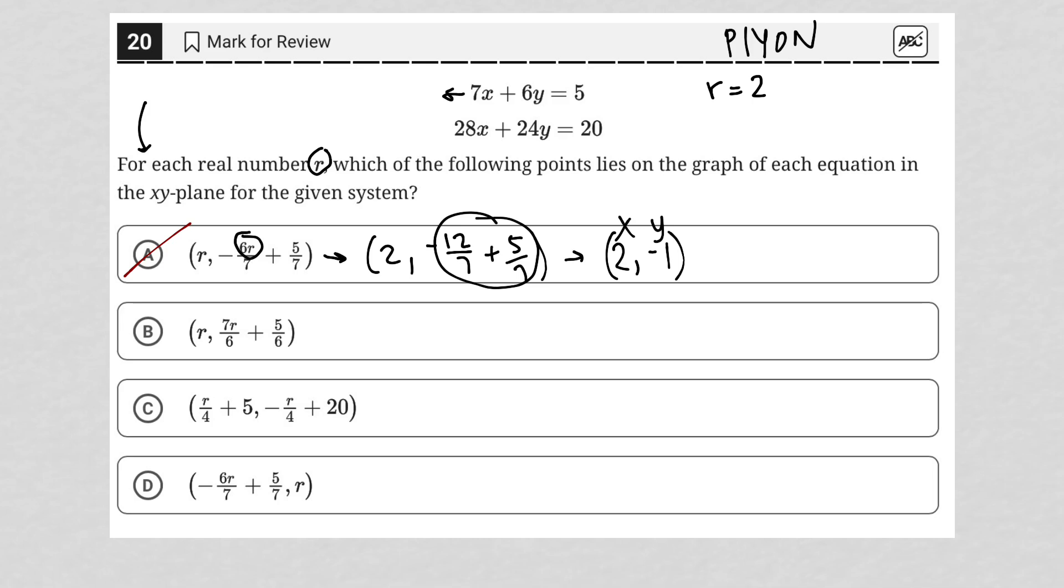Next, we're going to try choice B. Again, I'm going to say r is 2. So we have 2, comma, now this will become 14 over 6 plus 5 over 6, which is 2, comma, 19 over 6. We're going to now test that out. So we'd have 7 times 2 plus 6 times 19 over 6 equals 5. The 6's cancel. 14 plus 19 does not equal 5. So once again, we have another answer choice that does not work, but it just means we're getting closer to our correct answer. So it's all good. Choice B is not correct.